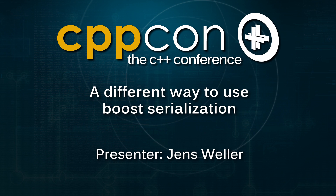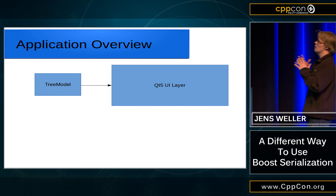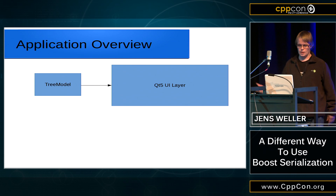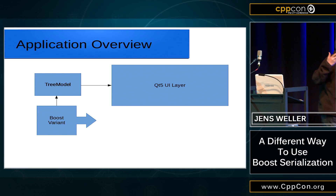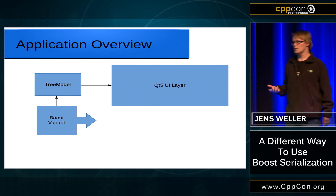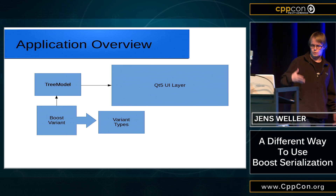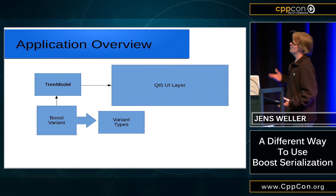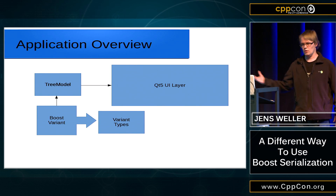This is a short application overview. I have a tree model, and that tree model is part of my acute layer. Inside this tree model is a tree, and the tree nodes are actually boost variants. This means that inside this boost variant I have kind of a type list of concrete types, and I want to serialize these concrete types as this is my data model.